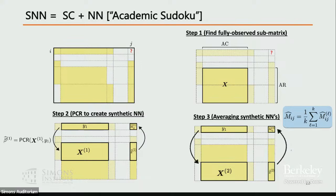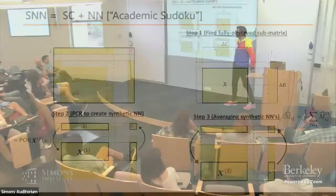Question: why break it into k blocks rather than one big block? Answer: When producing entry-wise guarantees, averaging over k different things gives you implicit denoising that we can't theoretically prove with just one massive regression. It's essentially tuning the bias-variance trade-off.